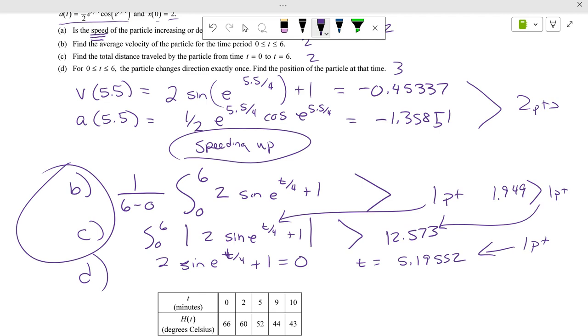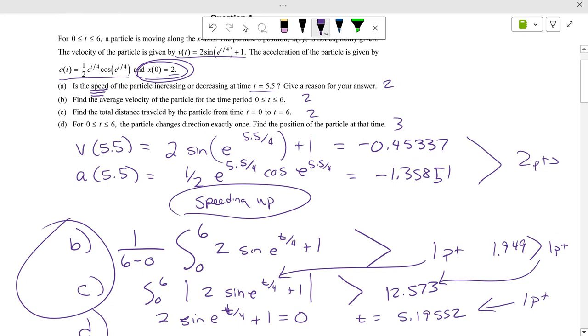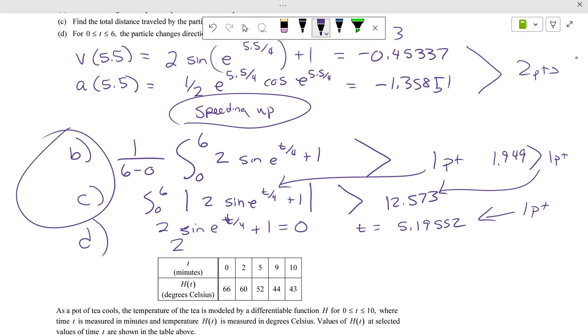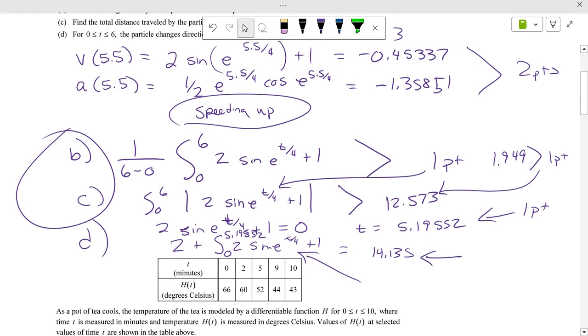Now, find the position of the particle at that time. How do we find it? Well, our position, at time zero, my position is two, right? So if I go two plus the integral of two sine e to the t over four plus one, from zero to 5.19552, and I solved that to get 14.135, writing the integral down is worth a point, getting the answer is worth a point. That is nine points of a problem.